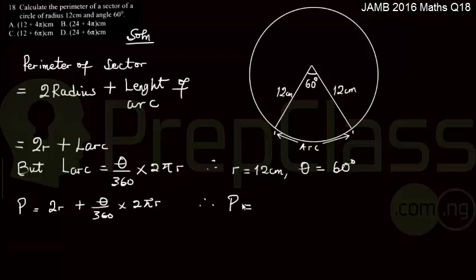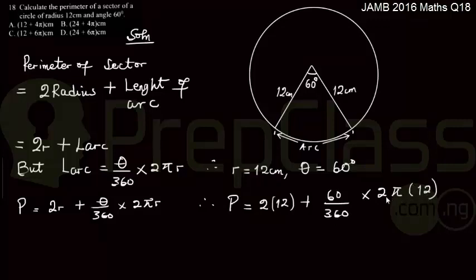the perimeter would therefore be equal to 2 times 12, plus 60/360 times 2π times 12. So what do we have?